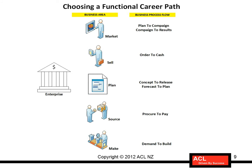In the next slide, I've aligned each of these functional business areas to business process flows. Each business area has a corresponding process flow in Oracle applications — specifically Oracle E-Business Suite. For instance, the business process flow related to marketing is called 'Plan to Campaign, Campaign to Results.' Plan to Campaign means you plan for campaigning, go and campaign in the market, and the campaign results in leads or prospects. It involves a number of modules in this process flow.